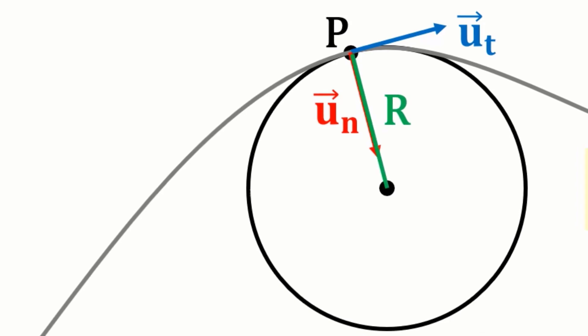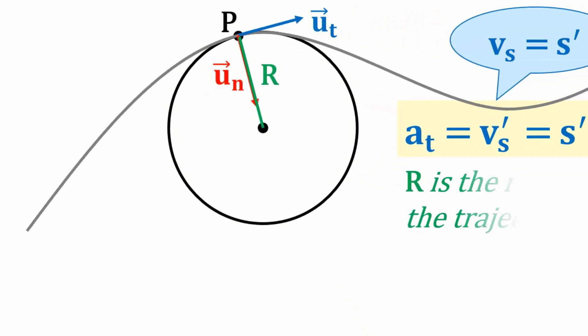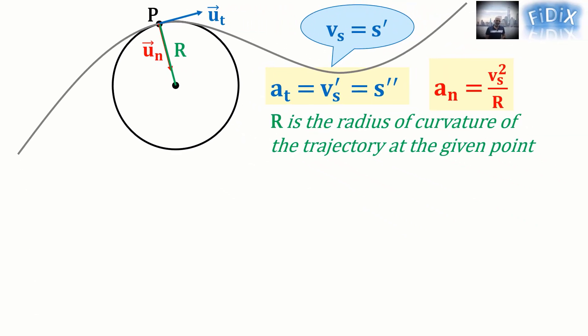R is the radius of this circle, and it is called the radius of curvature of the trajectory at the given point.